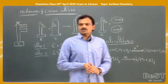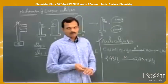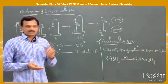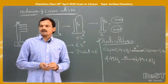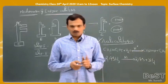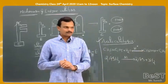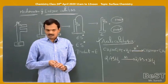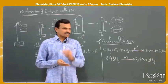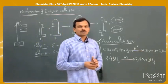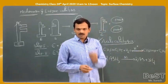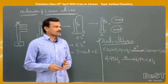Now, the commercial uses of catalysis. The first application is the manufacture of ammonia by the Haber process. In the Haber process, nitrogen combines with hydrogen to produce ammonia, using iron as catalyst and molybdenum as promoter, at a pressure of 200 atmospheres and a temperature of 773 K. The ammonia produced is used for the preparation of urea.